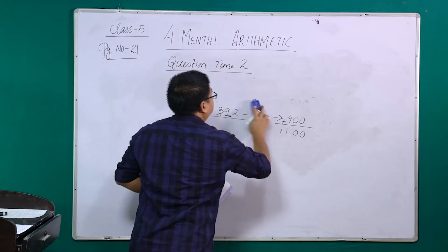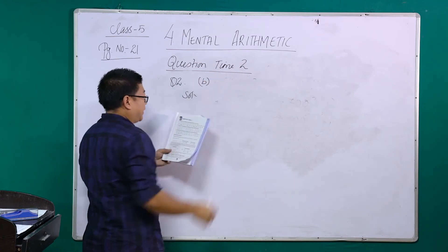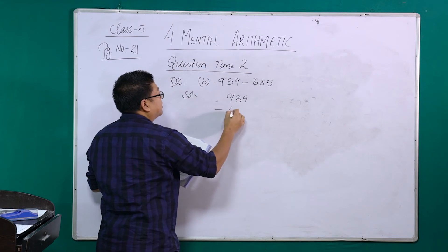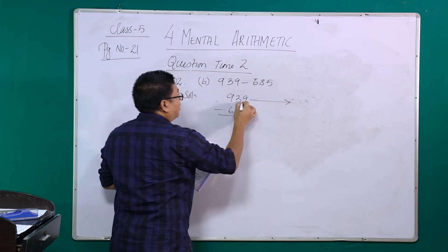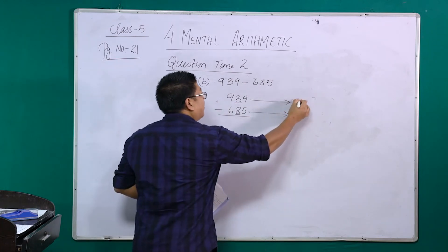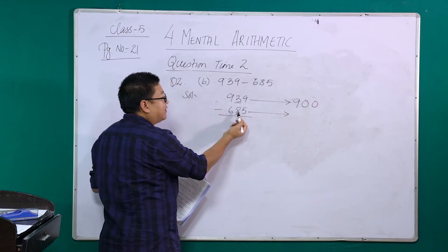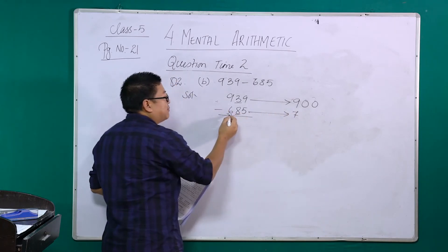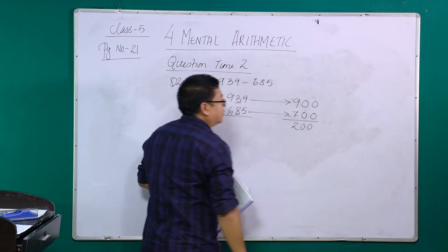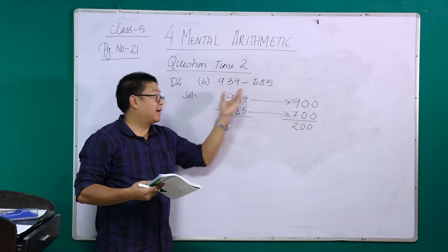Let's do question 2B: 939 minus 685. We round off to the nearest 100, so we check the 10's place. For 939, the 10's place digit is 3, which is less than 5, so the 100's place 9 remains as is, and the last two digits become 0, giving 900. For 685, the 10's place digit is 8, which is greater than 5, so we add 1: 6 plus 1 is 7, and the last two digits become 0, giving 700. Subtracting: 900 minus 700 is 200. The other questions follow the same steps — kindly practice at home.